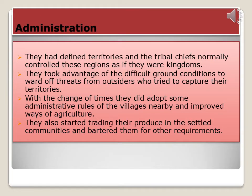Regarding the administration of tribal people — they had defined territories, and tribal chiefs normally controlled these regions as their kingdoms. They took advantage of difficult terrain to ward off threats from outsiders who tried to capture their territories. Over time, they adopted some administrative roles of nearby villages and improved their ways of agriculture. They also started trading their produce with settled communities, bartering for other requirements.